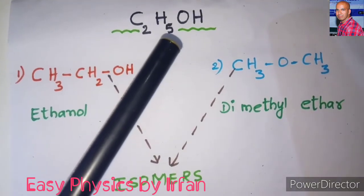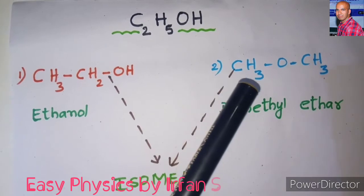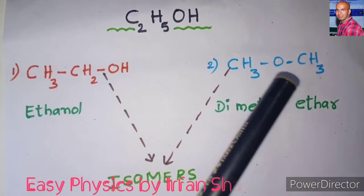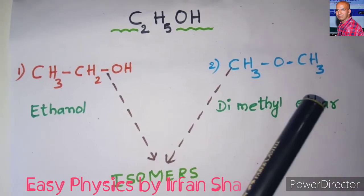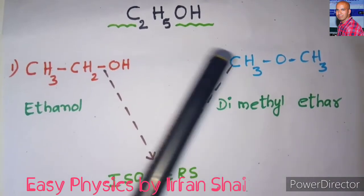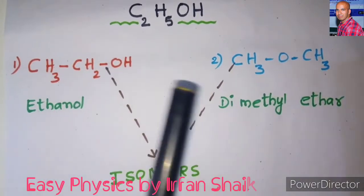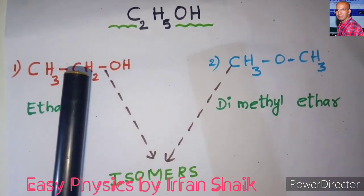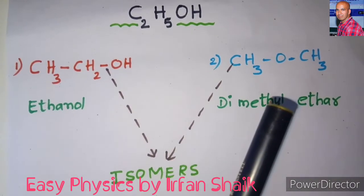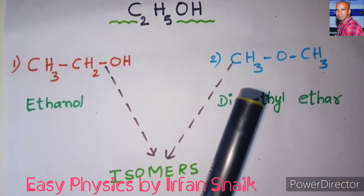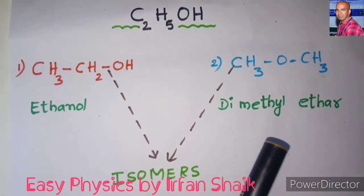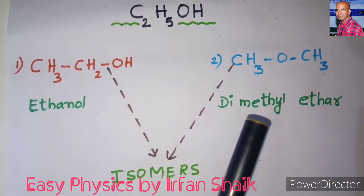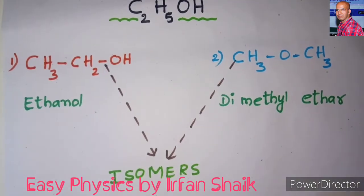The same chemical formula can also be written as CH3–O–CH3. In this structural formula there are also 2 carbon atoms, 6 hydrogen, and 1 oxygen. In both structures the number of carbon atoms, hydrogen, and oxygen are the same — meaning the chemical formula is the same but the structures are different. That is why these two are different compounds with different chemical properties. This one is ethanol and this one is dimethyl ether. So this is called isomerism, and these two are called isomers.